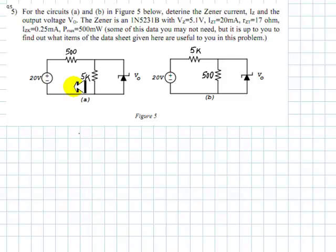Question number 5. For the circuits A and B in figure 5 below, determine the Zener current IZ, this current, IZ, and the output voltage, this one, V0.